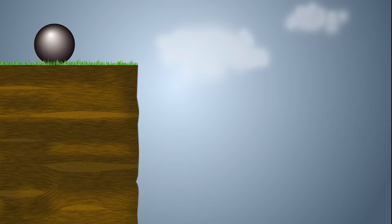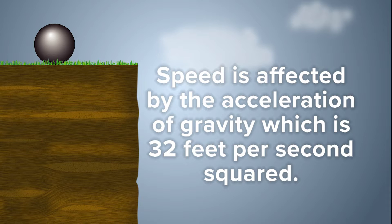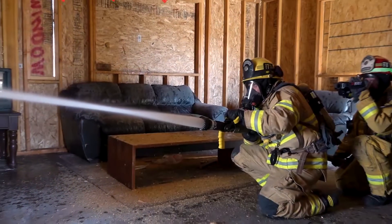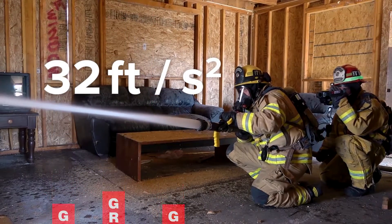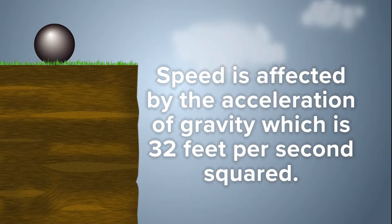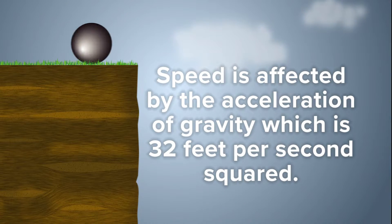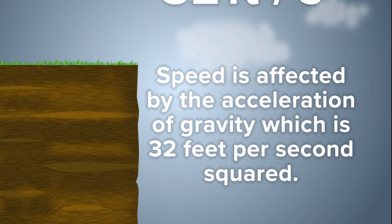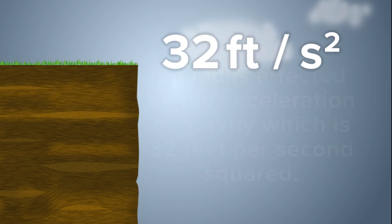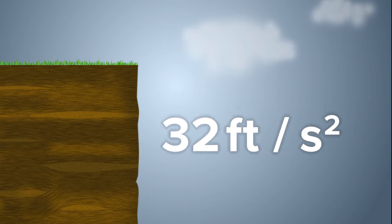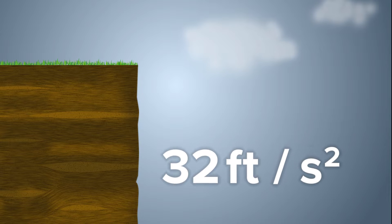As something falls, the speed at which it falls is affected by the acceleration of gravity, which is 32 feet per second squared. An important thing to realize is that speed gets exponentially faster with time as the object falls. This makes more sense as we look at the equation to solve for distance of a falling object.